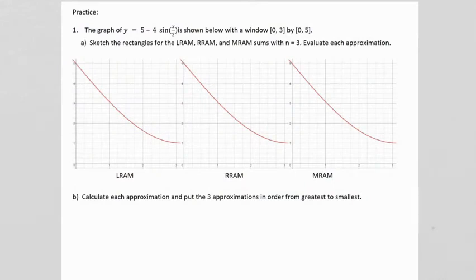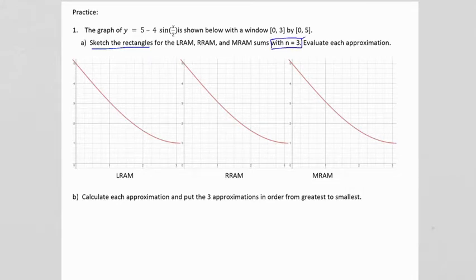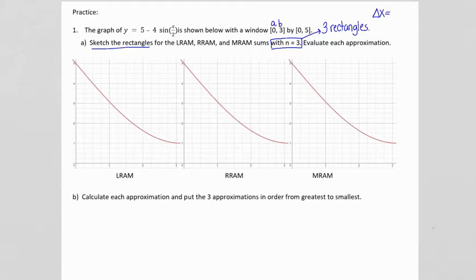Let's practice. We have the graph y equals 5 minus 4 sine of x over 2, with a window of 0 to 3 on x and 0 to 5 on y. First, we want to sketch the rectangles for LRAM, RRAM, and MRAM with N equal to 3 — that means three rectangles. So we calculate the base: delta x equals B minus A divided by N, which is 3 minus 0 divided by 3. We're making rectangles of base 1.